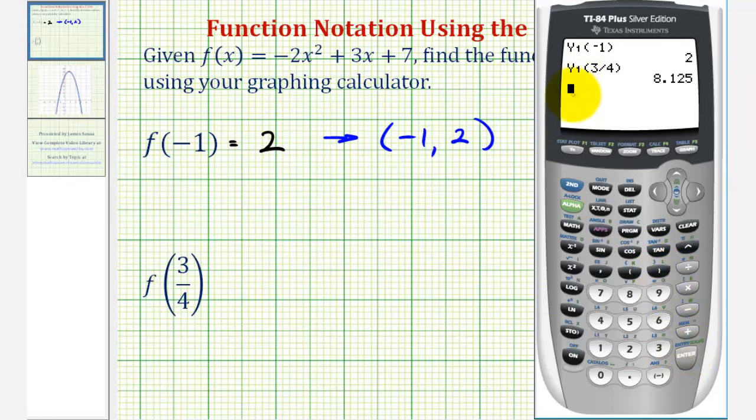Notice how the function value is a terminating decimal, so this is the exact function value. But since the input or x value is a fraction, let's convert this back to a fraction. To do this, press math, enter, enter. The function value is 65 eighths or 8.125.